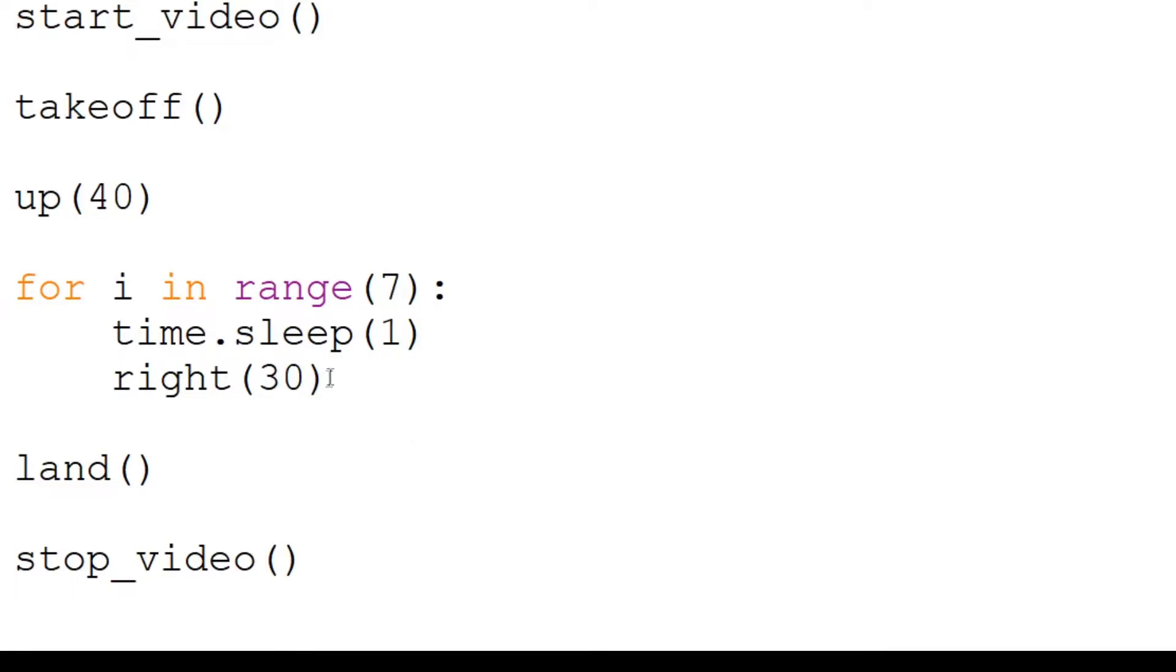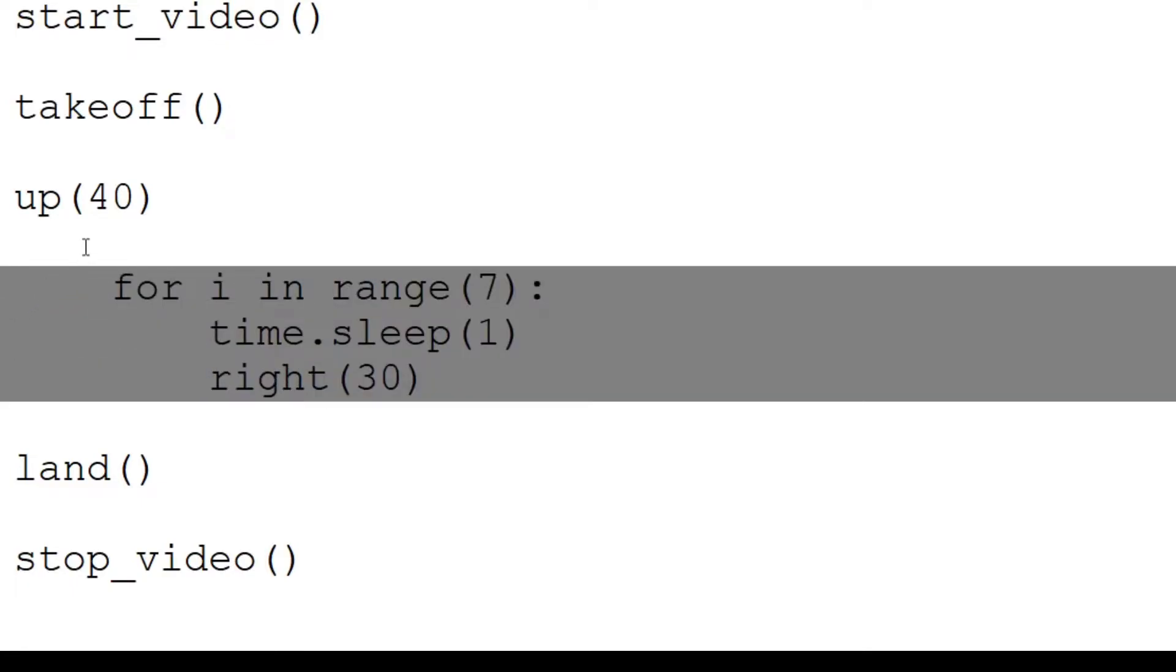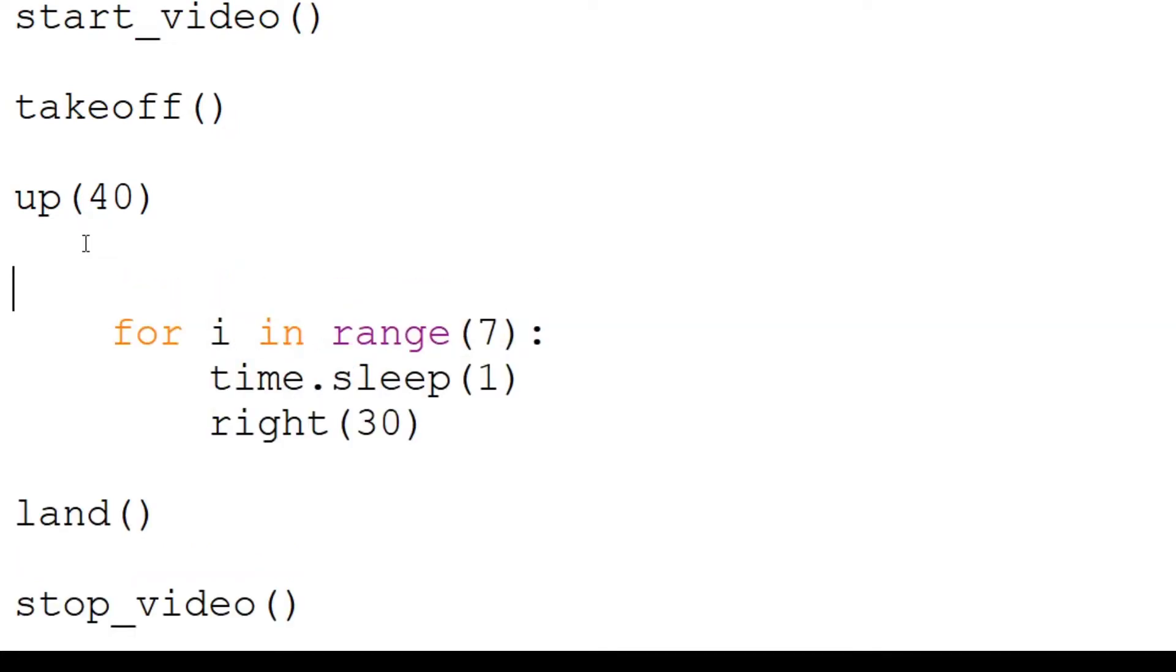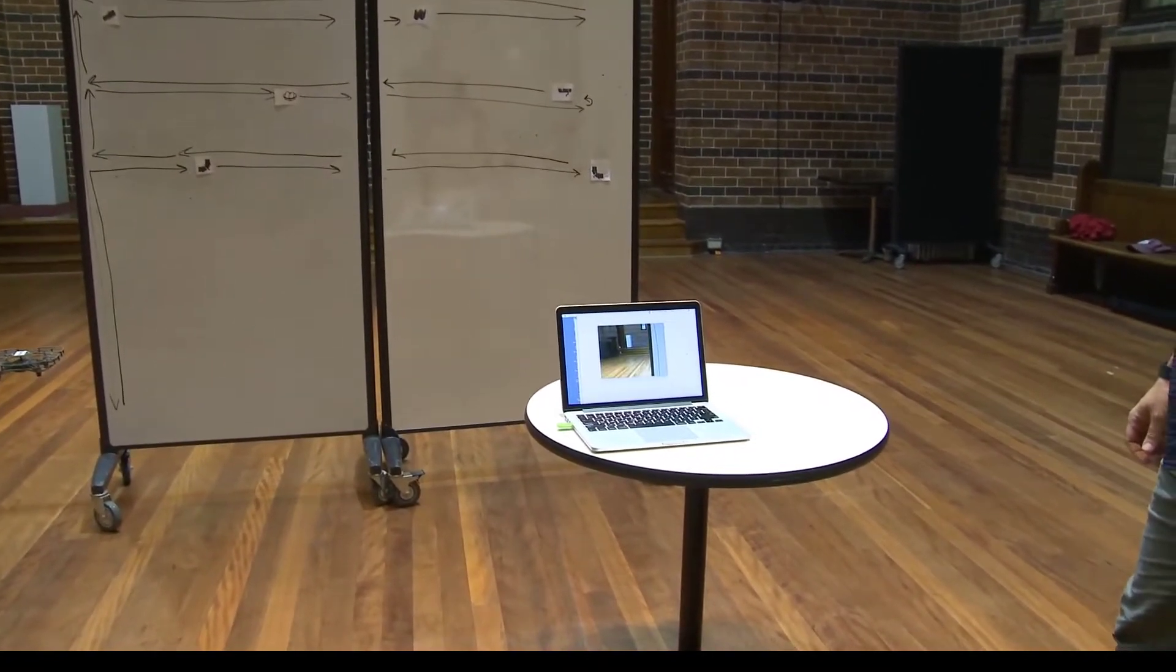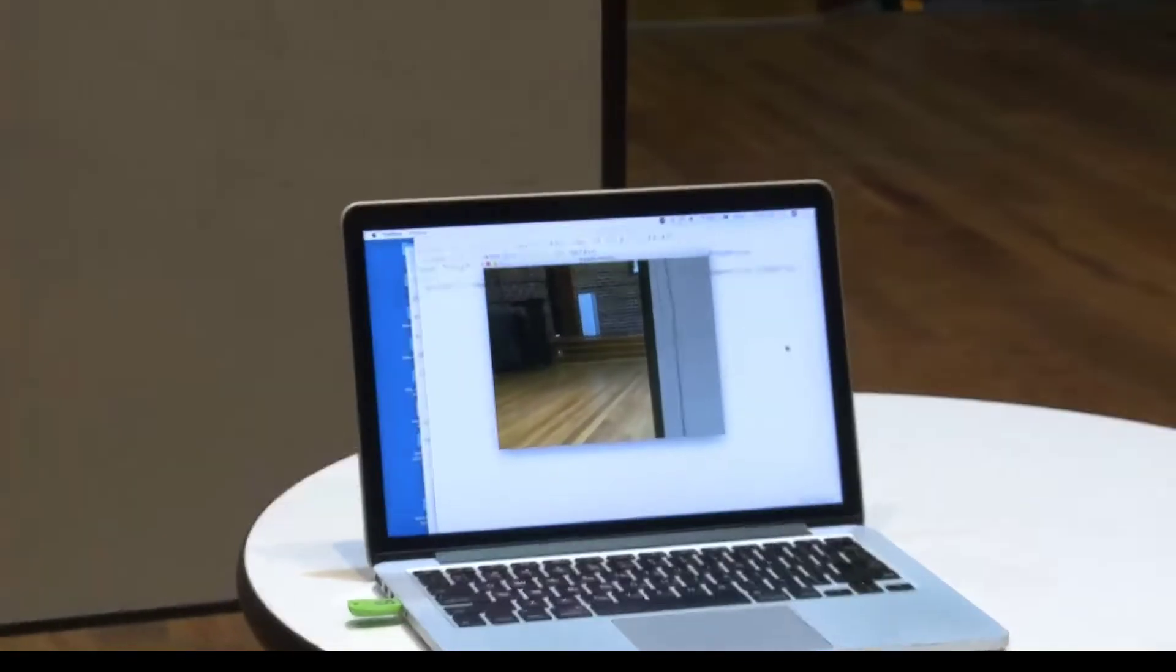To do a nested loop, we need to indent our loop. We can select multiple lines and press the Tab key. We will use J instead of I, since I is already in use. We will loop this entire code three times, as we want to scan three rows. Then, after our inner loop, we will move left all the way back. Since we've moved right 30 centimeters seven times, we will multiply that and therefore move left 210 centimeters. Make sure the indentations align with our inner loop. Once we move left, we will fly up 20 centimeters to the next row.